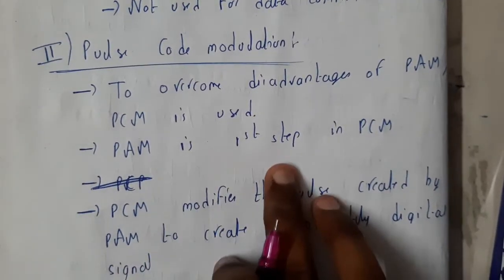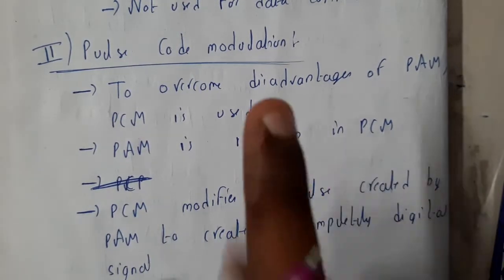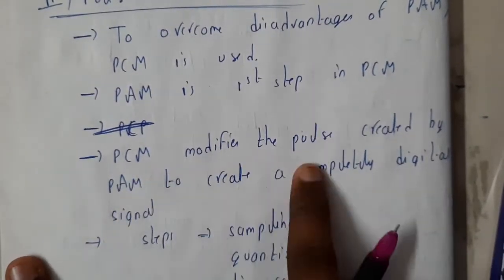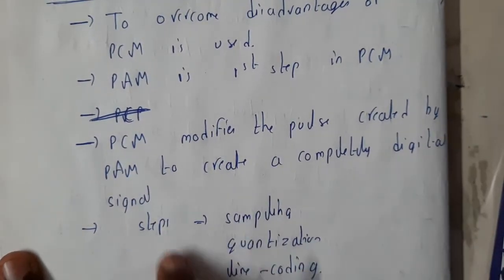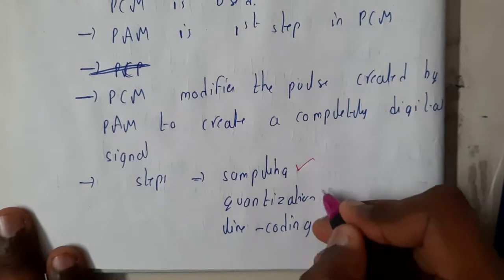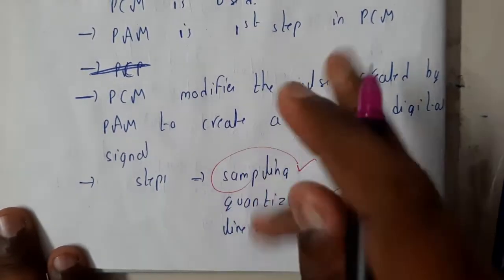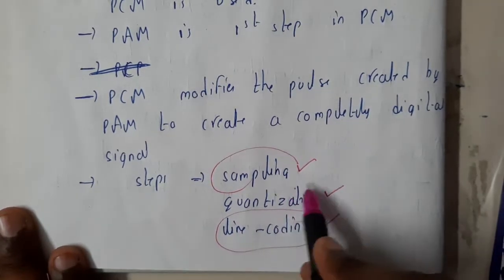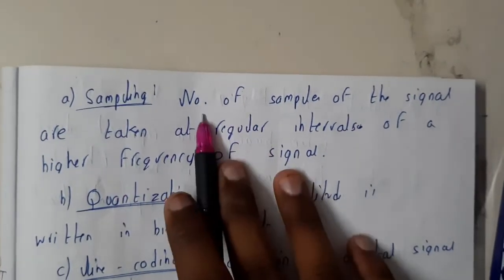Pulse Code Modulation (PCM) is used to overcome the disadvantages of PAM. In fact, PAM is the first step in PCM. PCM modifies the pulses created by PAM to create a completely digital signal. The steps in PCM are: sampling, quantization, and line coding. Sampling and line coding we have discussed previously, so quantization is the new step here.